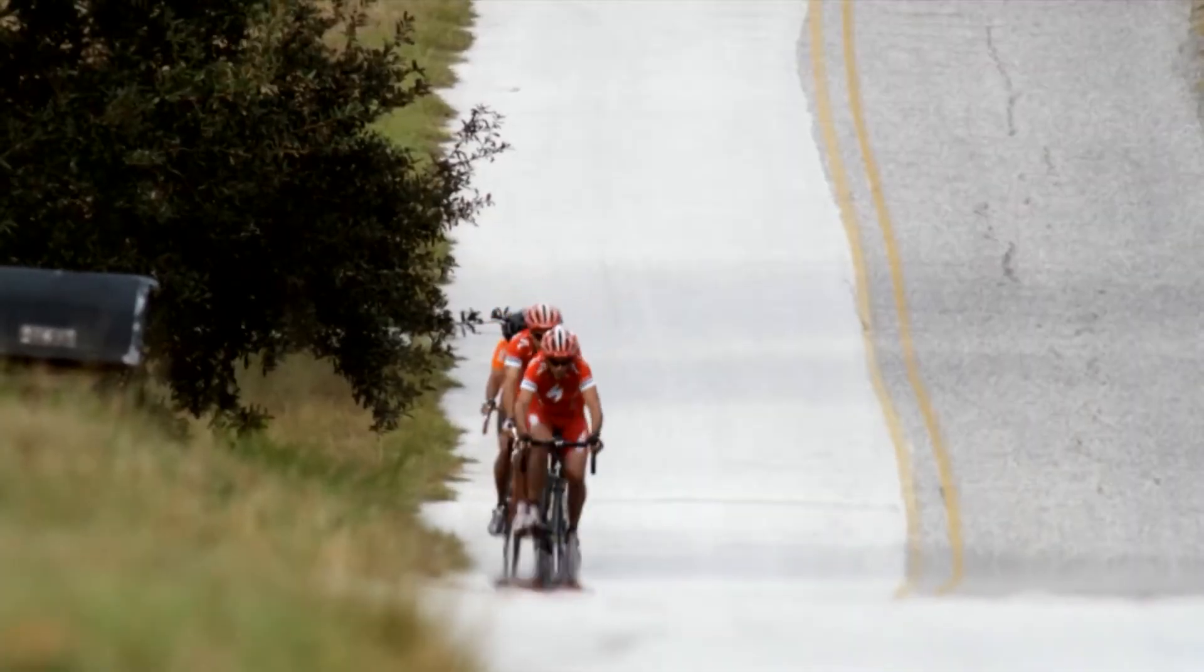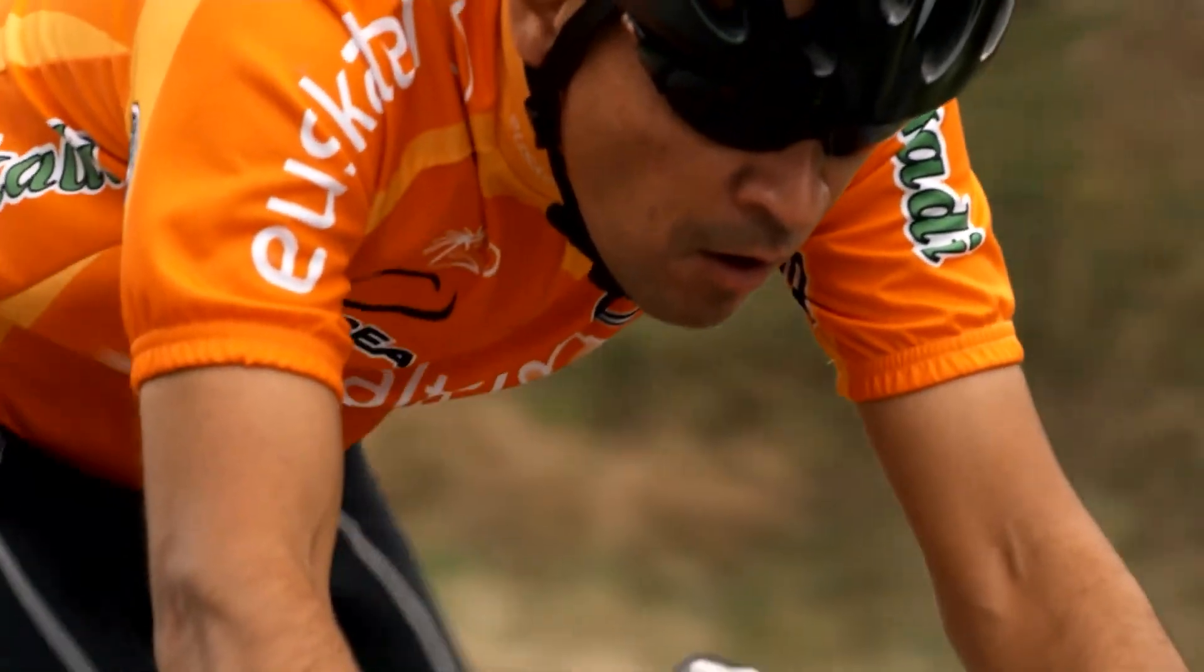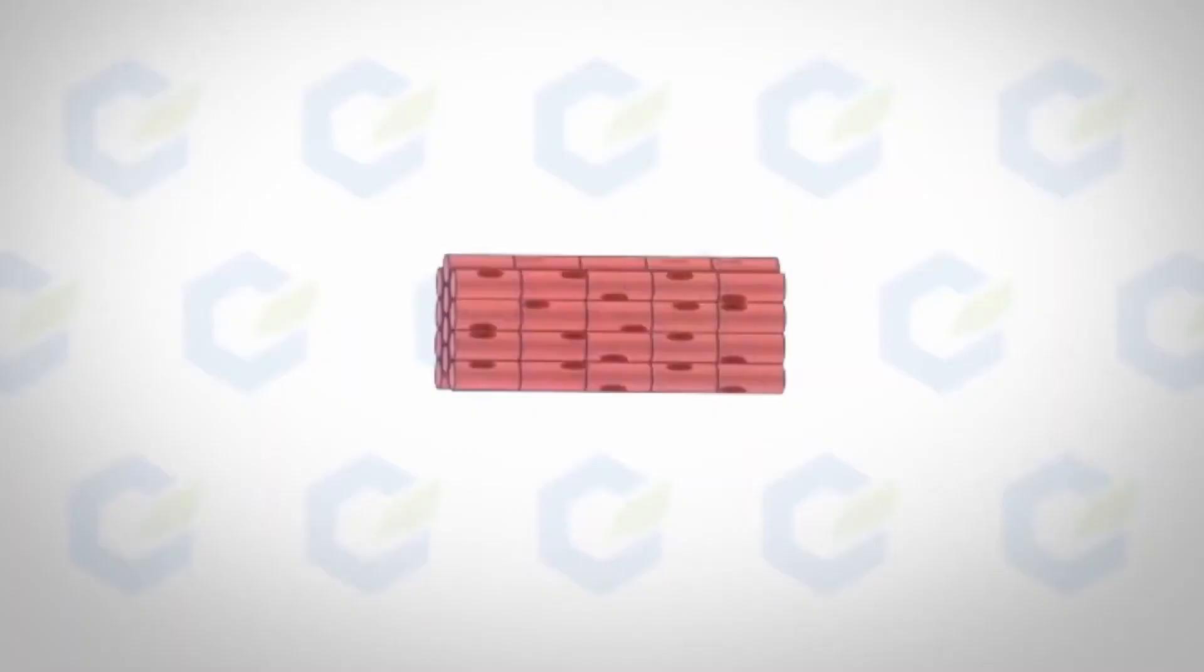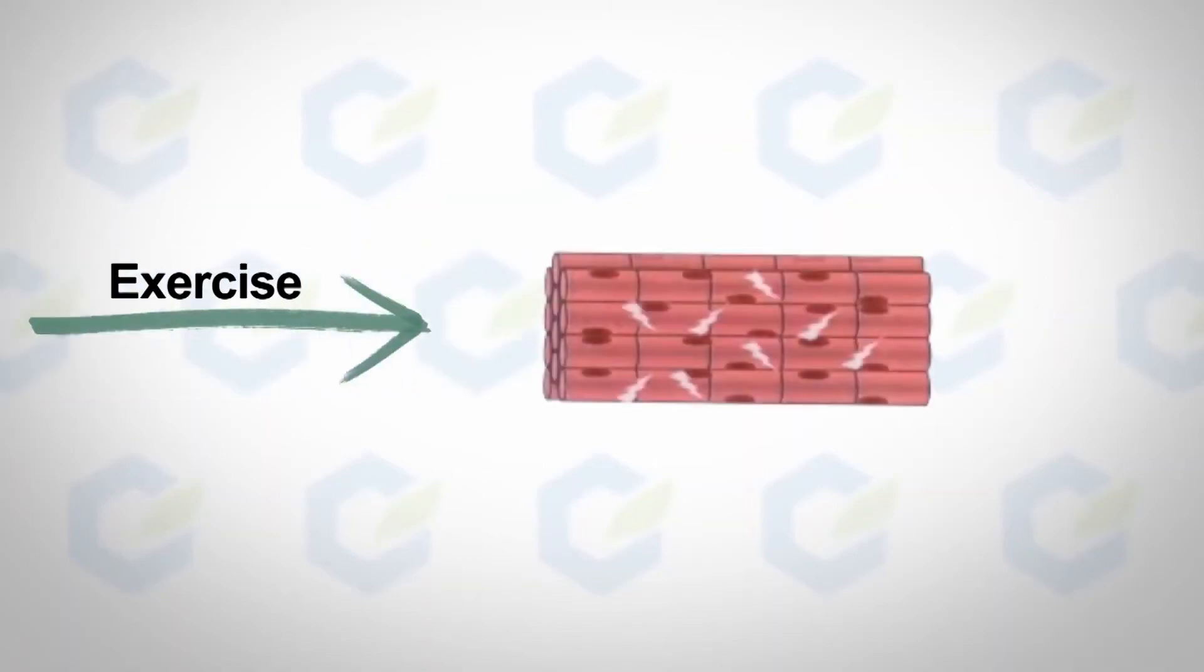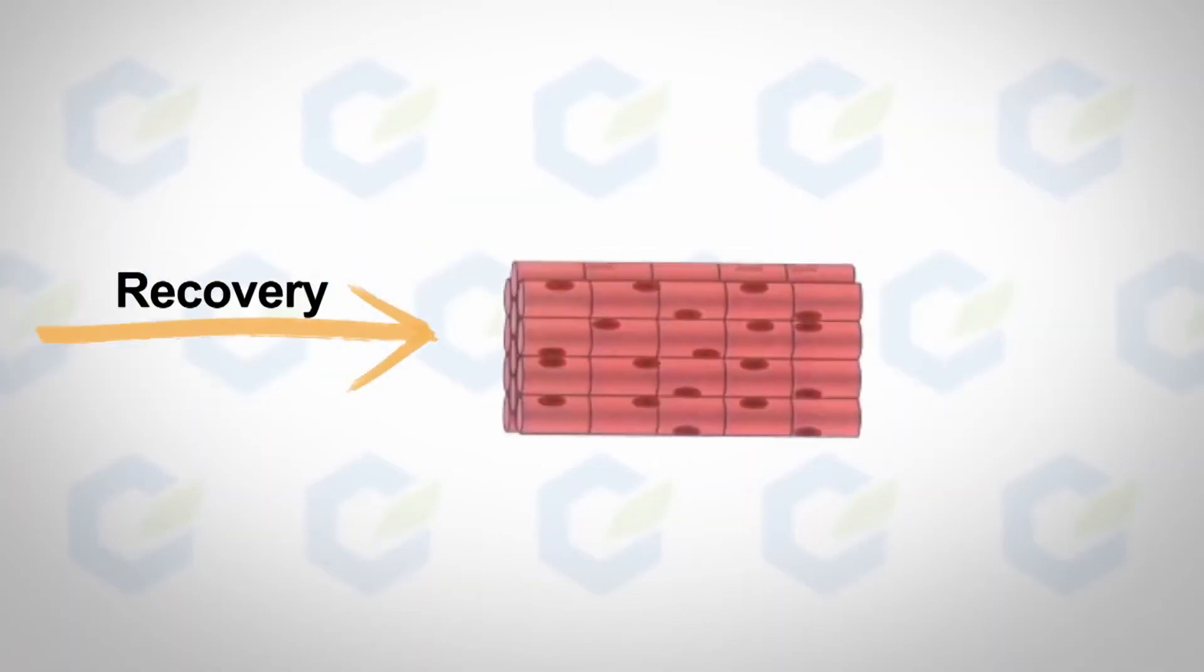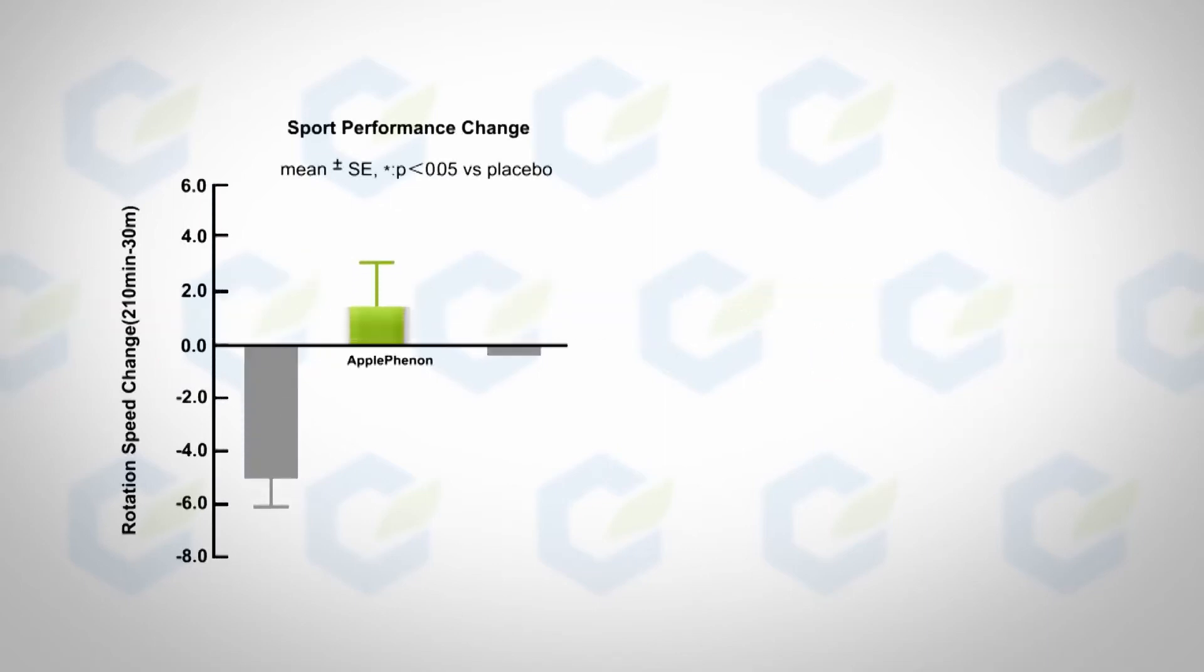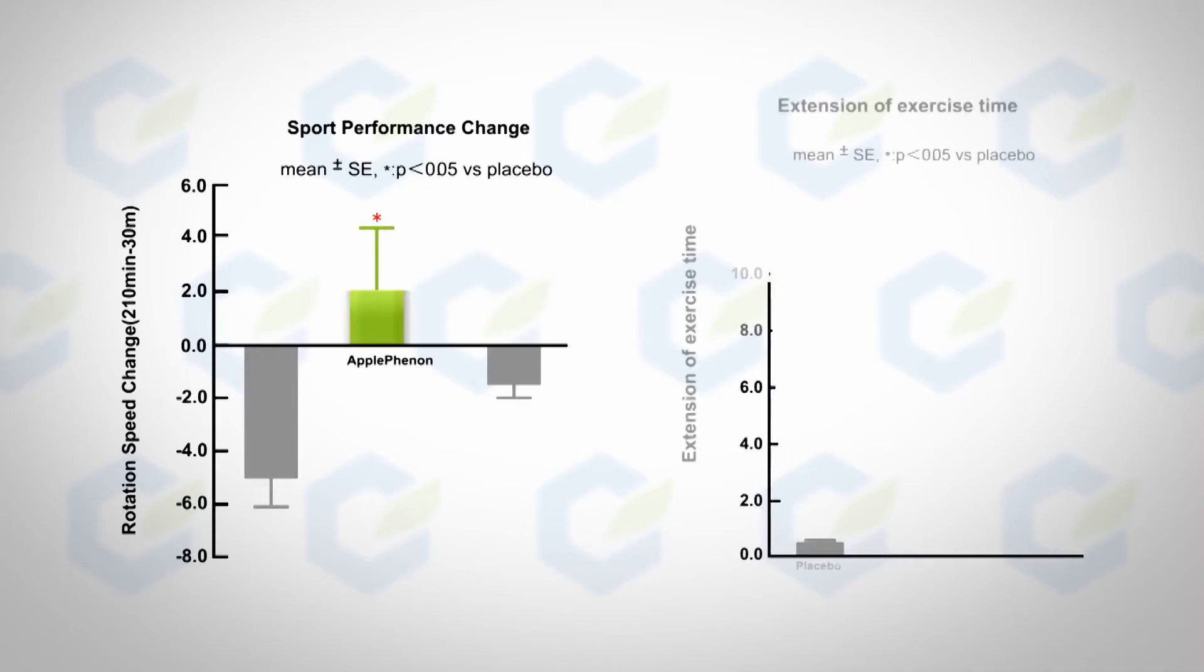Sports endurance and rapid recovery after exercise are important for athletes. Apple Phenod helps alleviate muscle damage by decreasing active oxygen generation during exercise. Clinical studies on college athletes have shown that supplementation of Apple Phenod significantly increases performance and exercise time in stationary bicycle exercises.